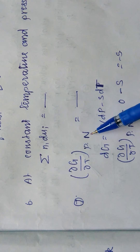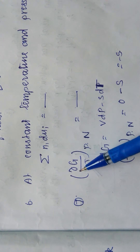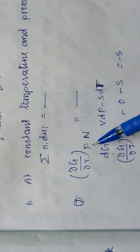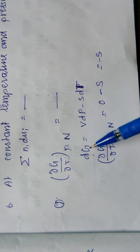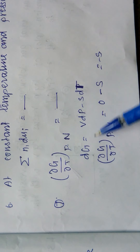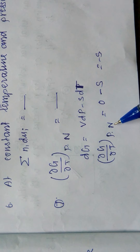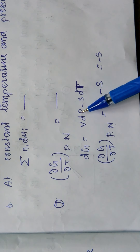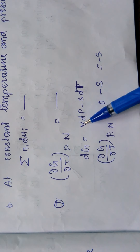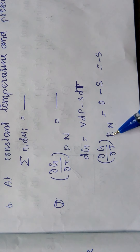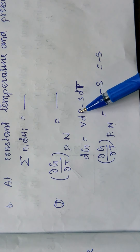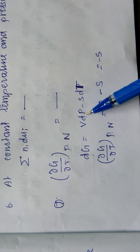Next: ∂G/∂T at constant pressure and n (number of particles). From the basic equation dG = V dP - S dT, when differentiating with respect to T at constant pressure, the dp term becomes zero (since dP = 0 at constant pressure), so the term V dP vanishes.